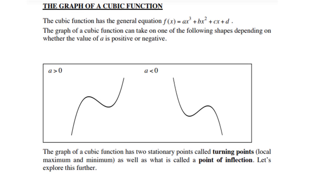The graph of a cubic function. The cubic function has the general equation f(x) = ax³ + bx² + cx + d. Take note, this is different from the parabola — remember the parabola is quadratic, whereas this one is cubic.